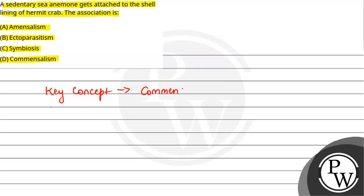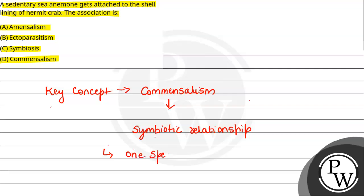अब commensalism क्या होता है? Commensalism हमारा एक type का species interaction होता है और यह एक symbiotic relationship होता है. इसमें जो दो species involved हैं, one species जो होगी वो unaffected रहेगी and एक species जो होगी उसको profit gain हो रहा है. So one species is unaffected and one species is getting benefit.